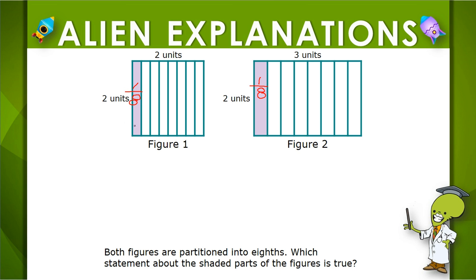But the fact that they're both one eighth of a figure — does that mean that they're the same size, or take up the same amount of area? Well, the figures start out as different sizes. You can see this piece looks a little bit wider than this piece, but we don't have to go on looks alone, because we're given that this square is two units by two units, and that this rectangle is two units by three units.